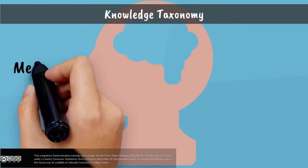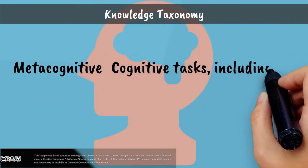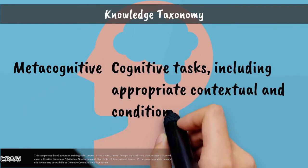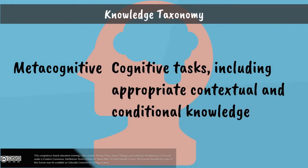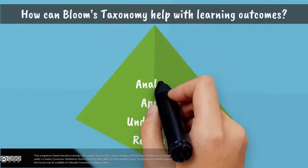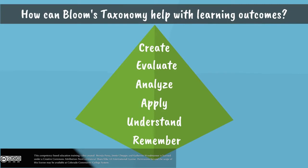And then there's metacognitive knowledge. It is about cognitive tasks, including appropriate, contextual, and conditional knowledge. So how can Bloom's Taxonomy help you create learning outcomes? As discussed, the hierarchical nature of Bloom's Taxonomy lends itself to how a student learns.